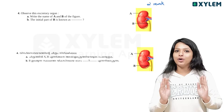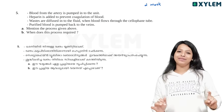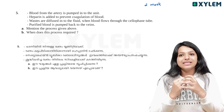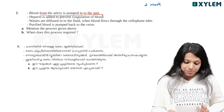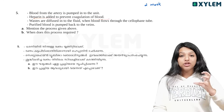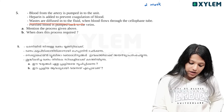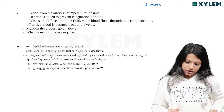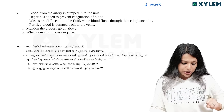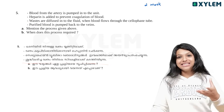If you have a flowchart, I will tell you a few sentences to identify this process in 5 steps. Blood from the artery is pumped into the unit. Heparin is added to prevent coagulation of blood. Wastes are diffused into the fluid when blood flows through the cellophane tube. The cellophane tube is removed. Purified blood is pumped back to the veins.